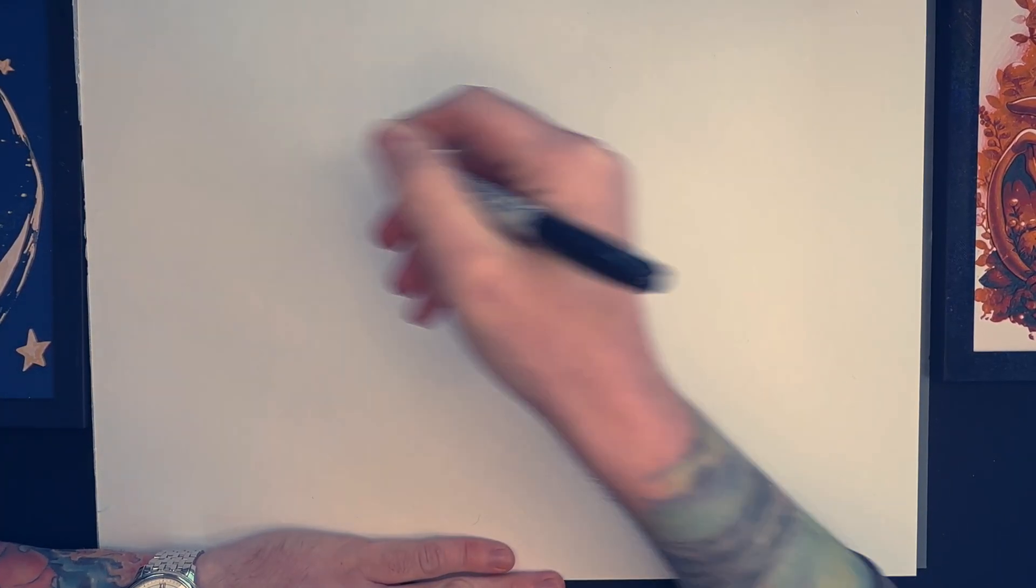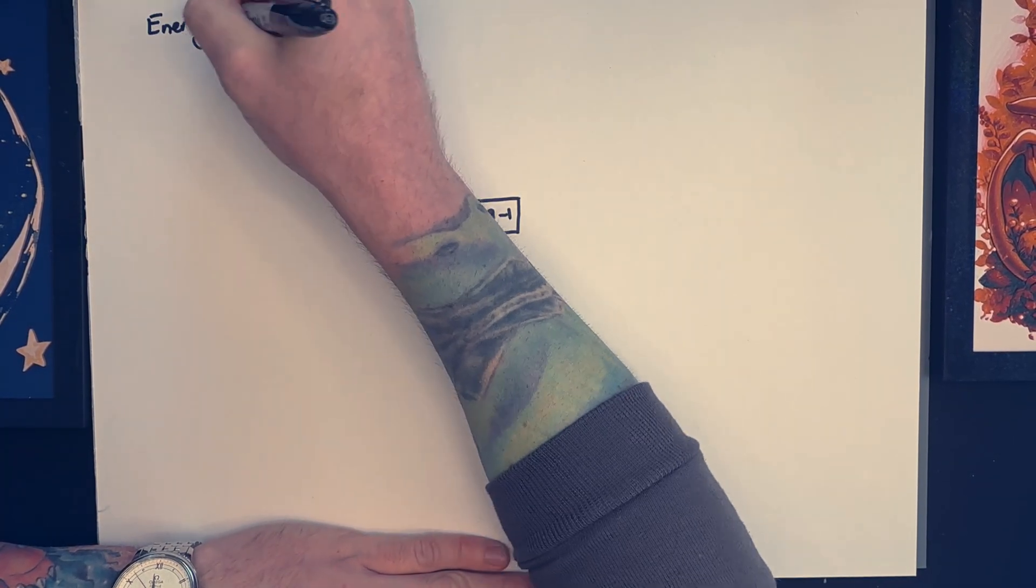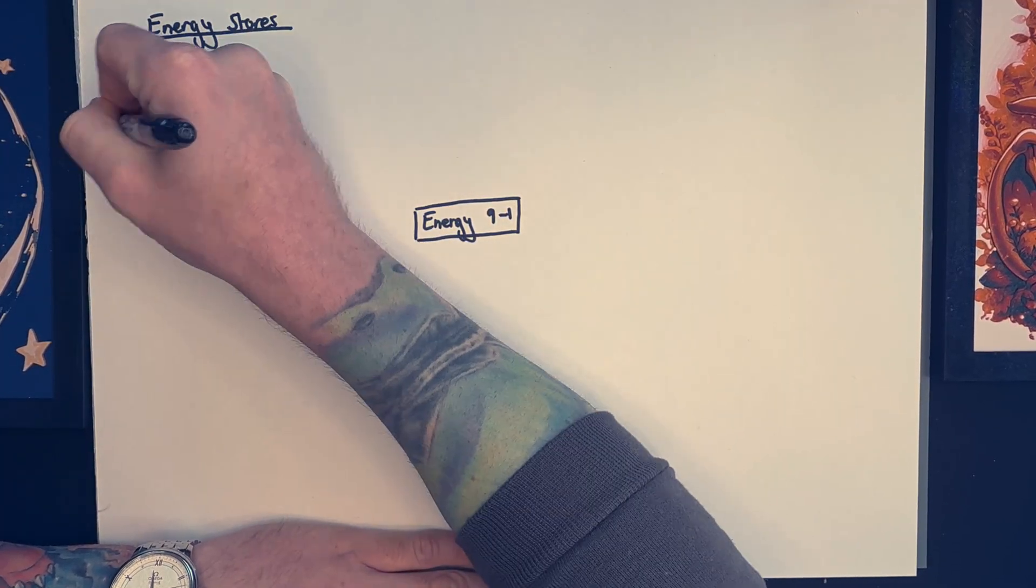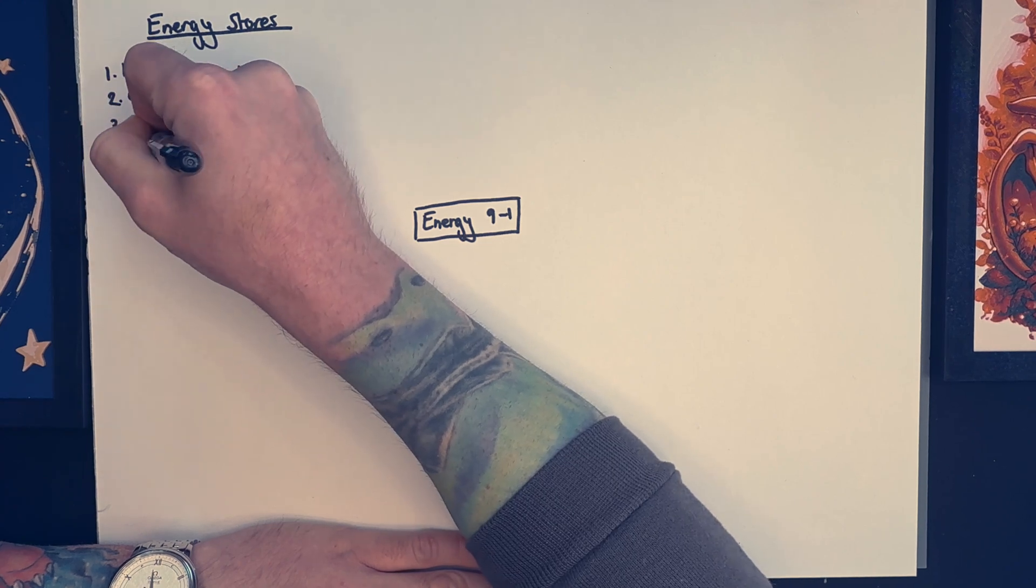Okay folks, so following along with me now please. On your paper, the center title is Energy and we're going to put 9-1, that's our qualification. Now I'm starting by listing the nine main energy stores that we learn about in GCSE physics.